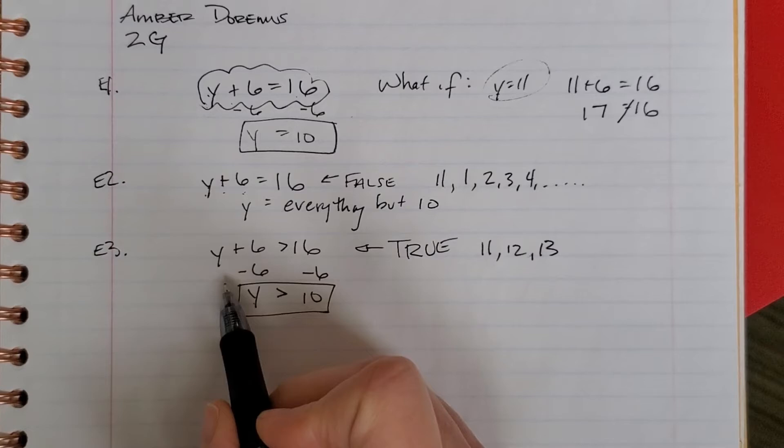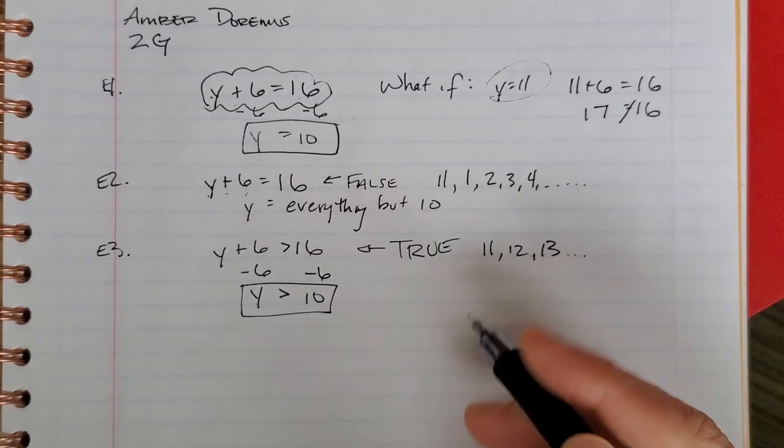13. 13 plus 6 is 19, and 19 is greater than 16. See where we're going? All the numbers that are greater than 10.